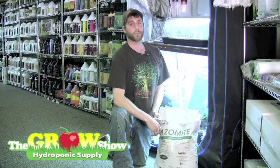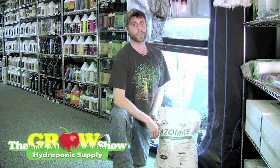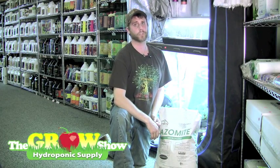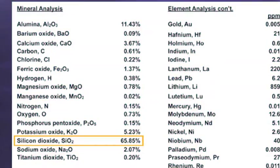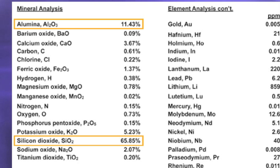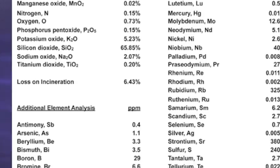Chemically speaking, azomite is a hydrated sodium calcium aluminosilicate containing about 65% silicon dioxide, 11.5% aluminum, and about 3% calcium oxide. It also contains over 70 minerals and trace elements.